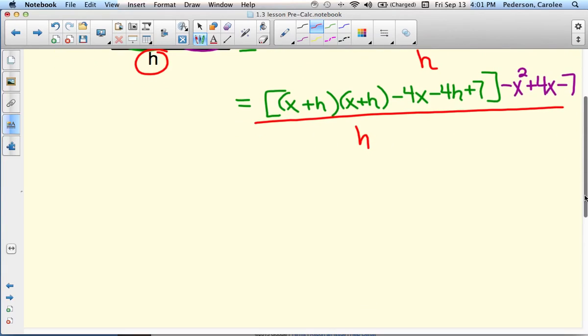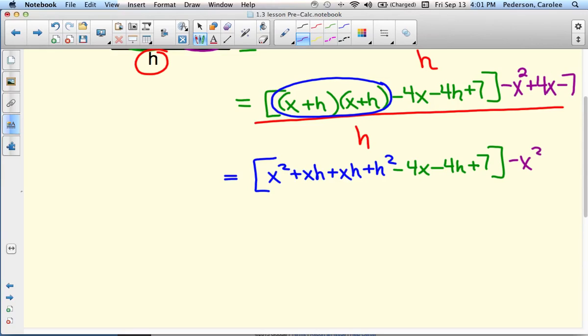Continuing our bracket, we're going to multiply these together by FOILing. So we get x squared, xh, plus xh, plus h squared. And then we still have minus 4x, minus 4h, plus 7. And then the purple, minus x squared, plus 4x, minus 7, all over h.